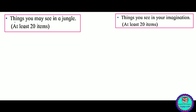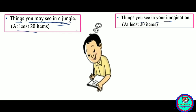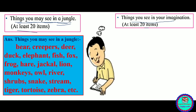Now, things you may see in the jungle — at least 20 items. Creepers, deer, dog, elephant, fish, fox, frog, hare, rabbit, jackal, lion, monkeys, owl, rivers, shrubs, snake, stream, tiger, tortoise, zebra, etc.